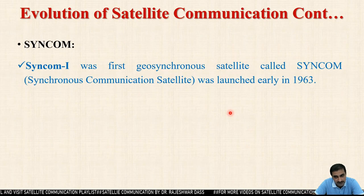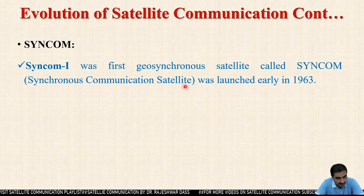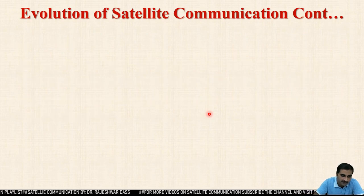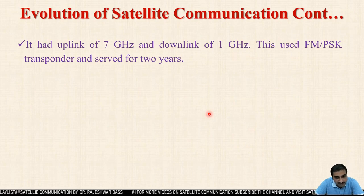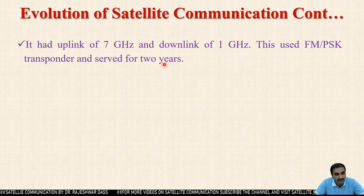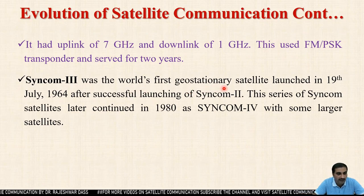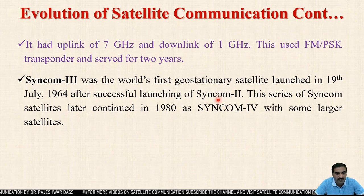After Telstar, the Syncom series came into the picture, launched in early 1963. Syncom stands for Synchronous Communication Satellite. Syncom-2 was jointly launched by NASA and the US Defense Department on 26th July 1963, with an uplink of 7 GHz and downlink of 1 GHz, using an FM-PSK transponder and serving for 2 years. Syncom-3 was the world's first geostationary satellite, launched on 19th July 1964. This series later continued in the 1980s as Syncom-4 with larger satellites.